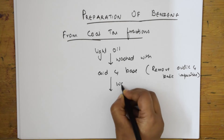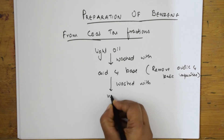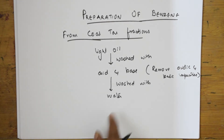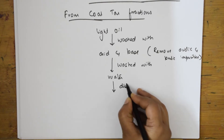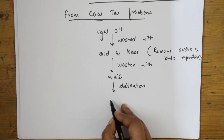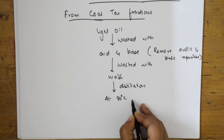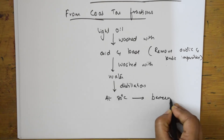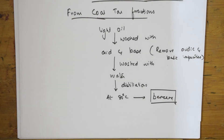After washing with acid and base, it is finally washed with water and taken to a distillation tank. In the distillation tank, the temperature is maintained according to the product required. Up to 180 degrees — benzene, toluene, xylene — all you will get. But here we are preparing benzene, so exactly at 80 degrees we get benzene. This is how it is prepared from coal tar fractions.